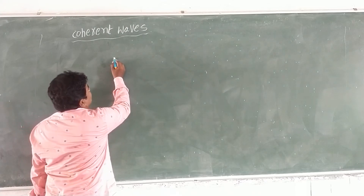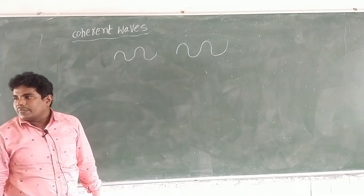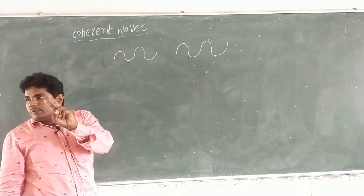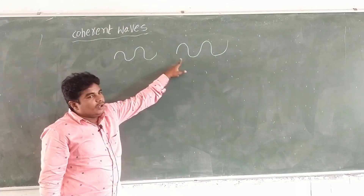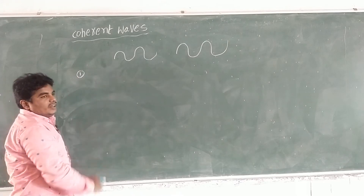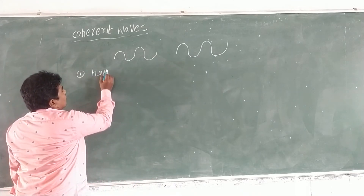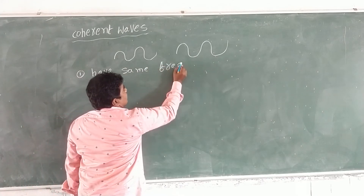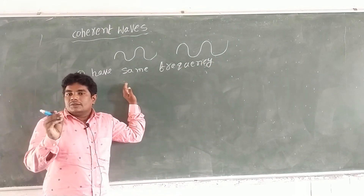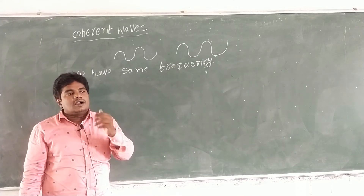So I am going to take two waves. These two waves form coherent waves under two conditions. First condition: waves have zero phase difference or constant phase difference.